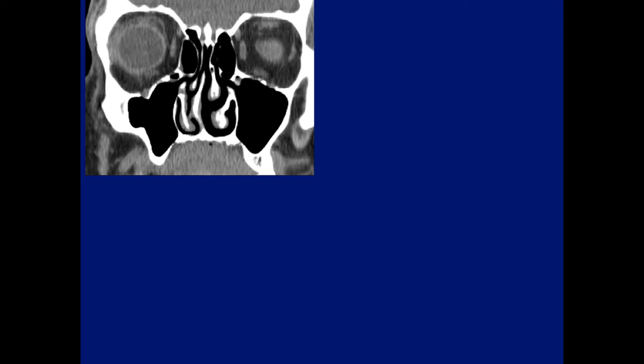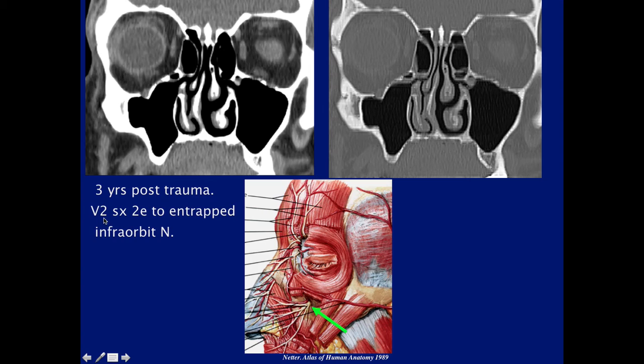The abnormality is the right infraorbital canal — it's fractured. This patient was three years post-trauma and had V2 symptoms due to entrapment of the infraorbital nerve. We can see the fracture here — this is a chronic fracture. If we look at the diagram, this would be the location of the maxillary division supplying the nose and upper face. This was a chronic fracture compared to the normal side.